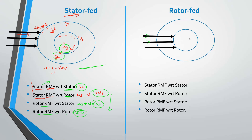Rotor fed means you are giving supply to the rotor. This is your rotor and this is your stator. The rotating magnetic field developed in the rotor — let's assume in this direction — its speed will be NS, and this RMF will result in another magnetic field in the stator whose speed will be SNS. Now this rotating magnetic field will tend to move the stator, but as we know the stator cannot rotate as it is fixed. Therefore the rotor will rotate in the opposite direction. Here also the speed of rotor is given by (1 minus S) times NS, where S is the slip and NS is the synchronous speed.